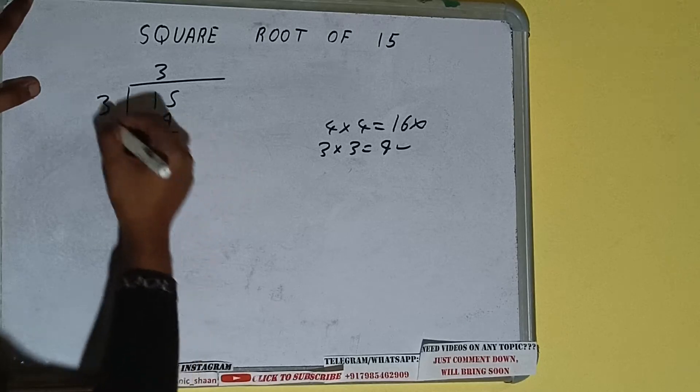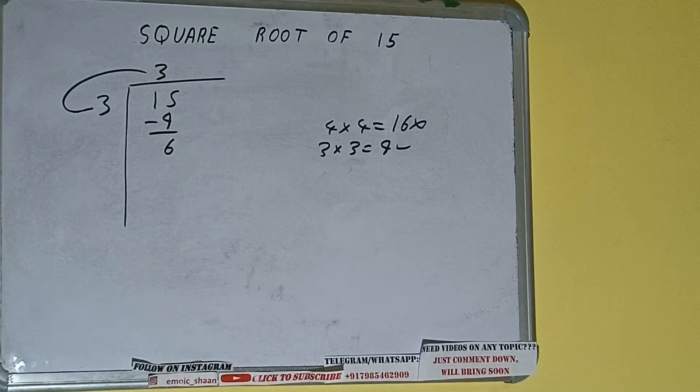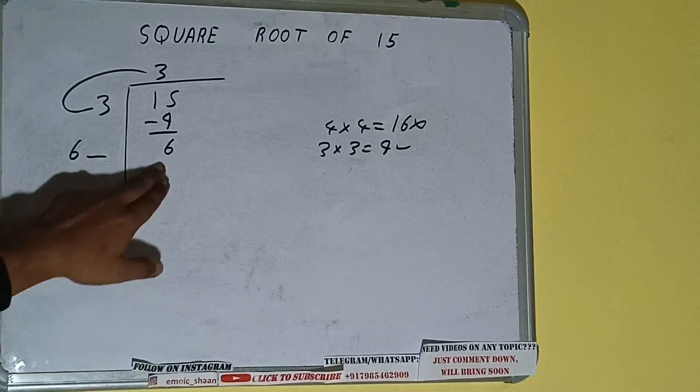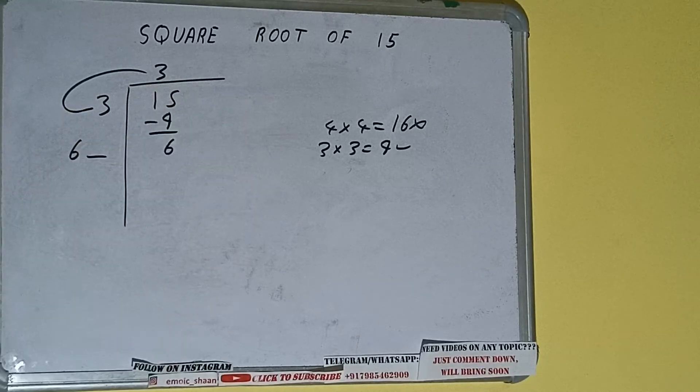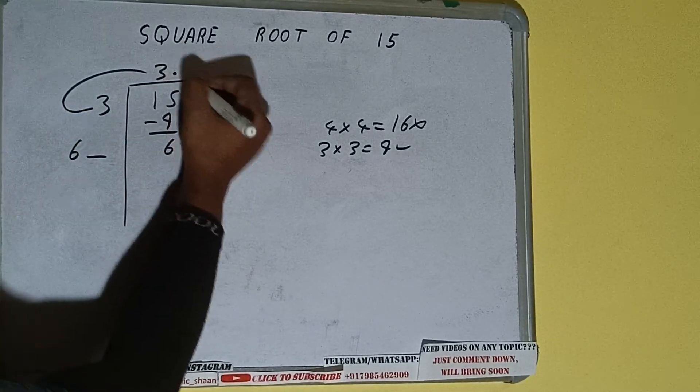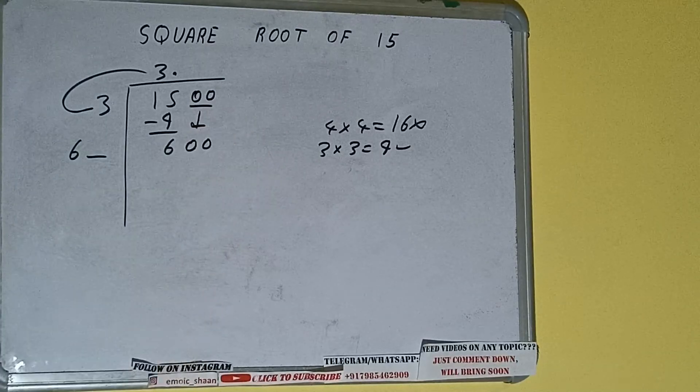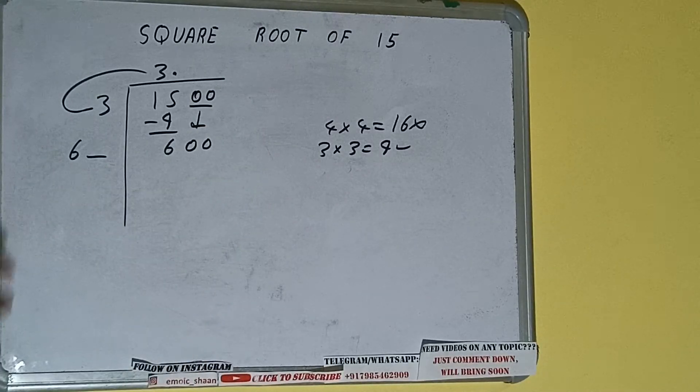We did 3 into 3, so add both. So 3 plus 3 will be 6. Write it here and keep one digit extra, and this number we need to make it big. But we don't have more pair, so we'll put decimal. Once we put decimal, we can bring pair of zeros down and it will be 600.